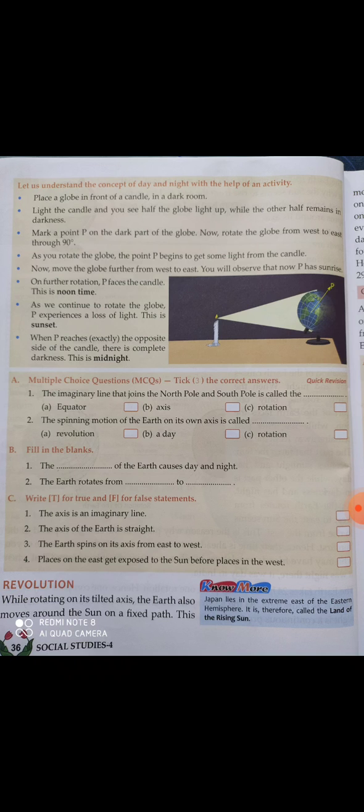Last time we learned that the globe — meaning the earth — rotates from west to east. So we also need to slowly start rotating the globe from west to east. But before that, what we have to do is mark a point P on any one spot in the middle of the globe — you can write anything there.